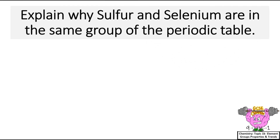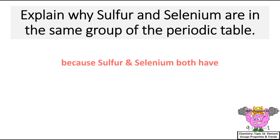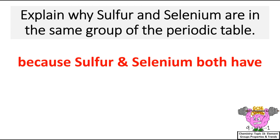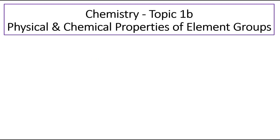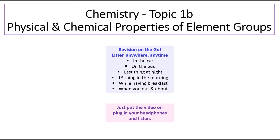Explain why sulphur and selenium are in the same group of the periodic table. To answer this question, you need to look on the periodic table to find these elements, and you'll see they're from Group 6, because sulphur and selenium both have six electrons in their outer shell. The key to exam success is learning, consolidation, and keeping this topic fresh in your mind to nail those questions in the Chemistry GCSE Paper 1 exam.